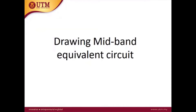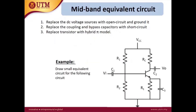In this video, we will discuss specifically how we can reconstruct the circuit into the mid-band equivalent circuit. There are three main steps: DC source becomes ground, capacitor becomes short circuit, and the transistor is replaced with the hybrid pi model. For example, we consider this circuit.